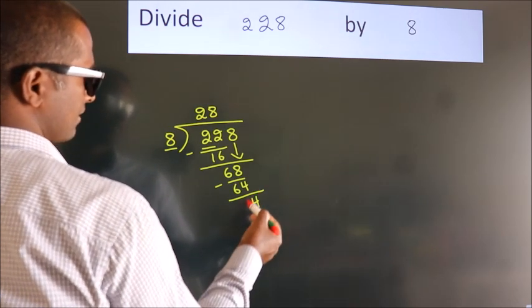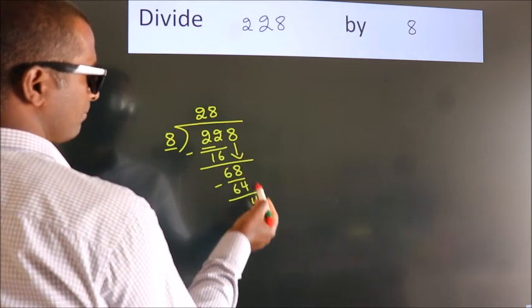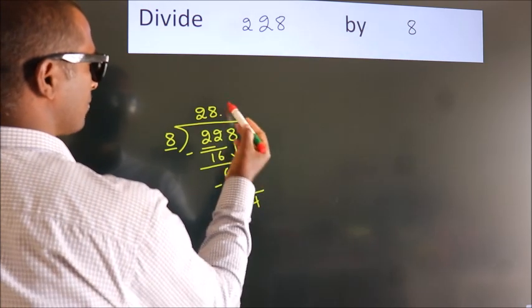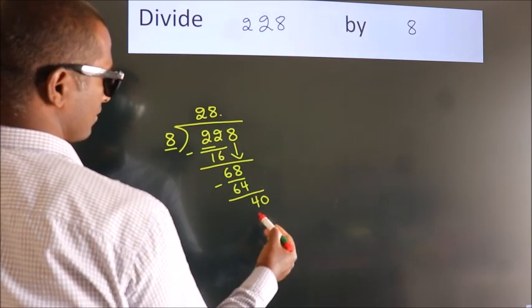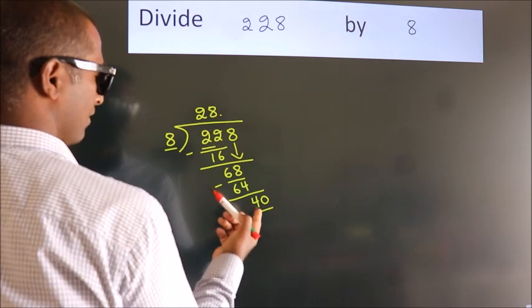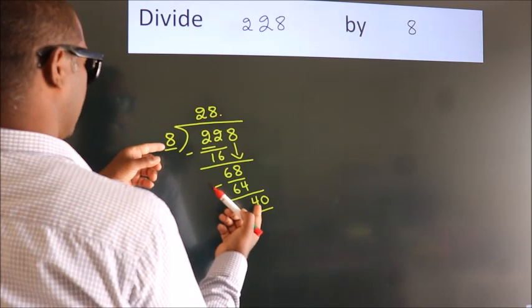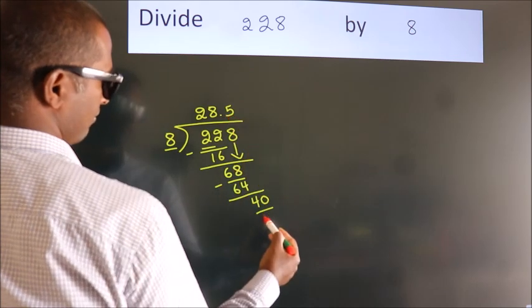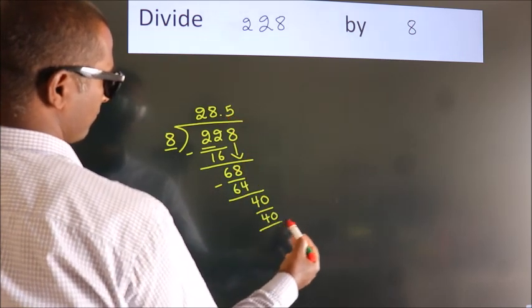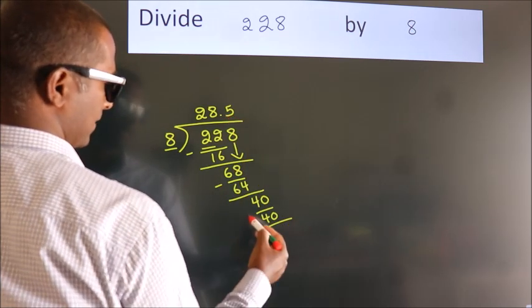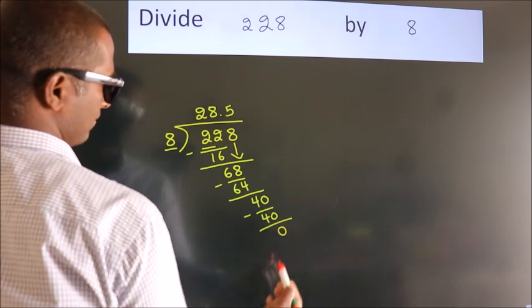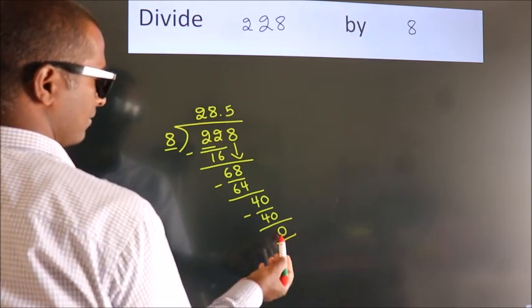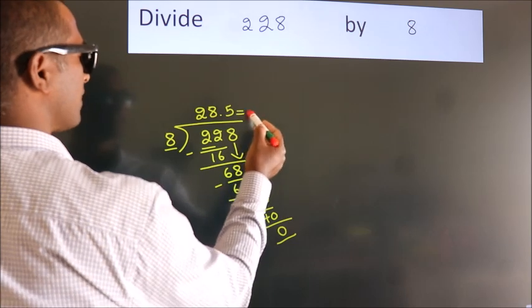After this, no more numbers to bring down. So what we do is put a dot and take 0, giving us 40. When do we get 40 in the 8 table? 8 fives is 40. Now we subtract and get 0. Here we got remainder 0, so this is our quotient.